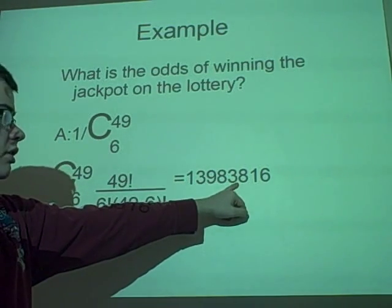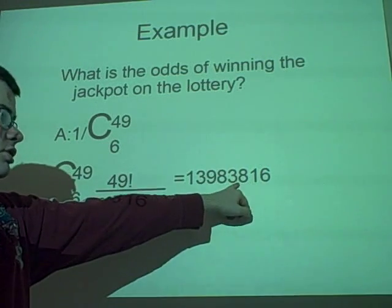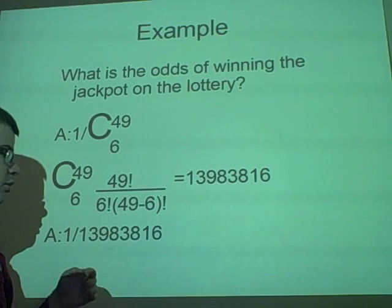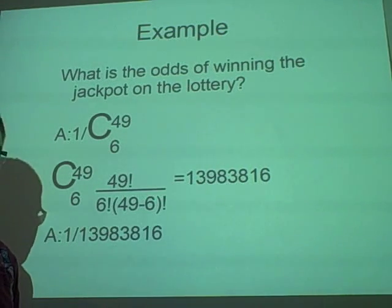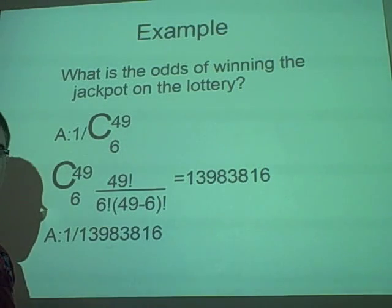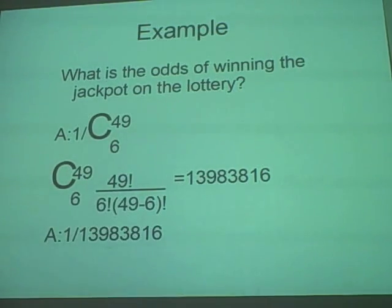What's that? Thirteen million nine hundred and eighty-three thousand eight hundred and sixteen. But this is the total number of ways, so we want one over it to be our probability. One divided by all of this, and that is your final answer. Thank you very much.